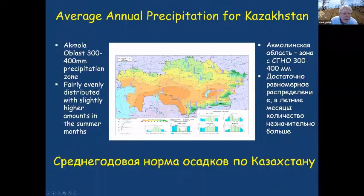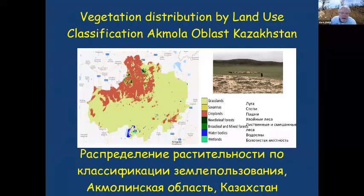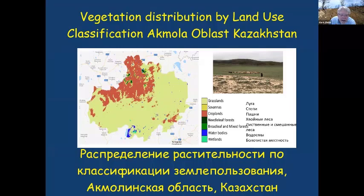The Akmola Oblast has about 300 to 400 millimeters of precipitation annually, fairly evenly distributed with slightly higher amounts in the summer months. Vegetation across this oblast is generally grasslands and croplands, with very few mixed forests in the mountainous regions. The dominant vegetation is suitable for livestock production, specifically beef cattle.